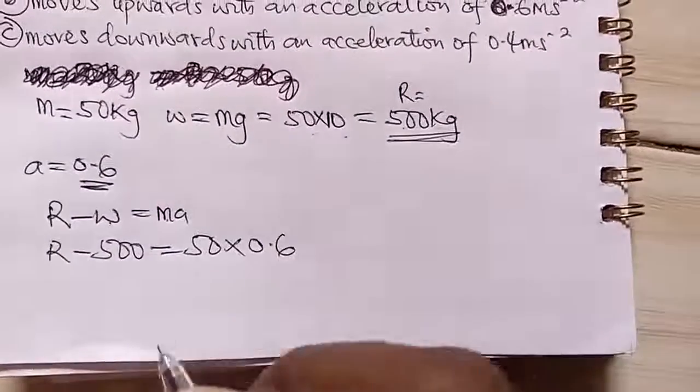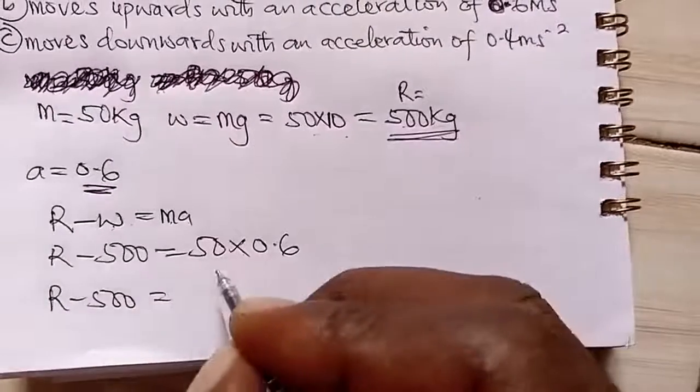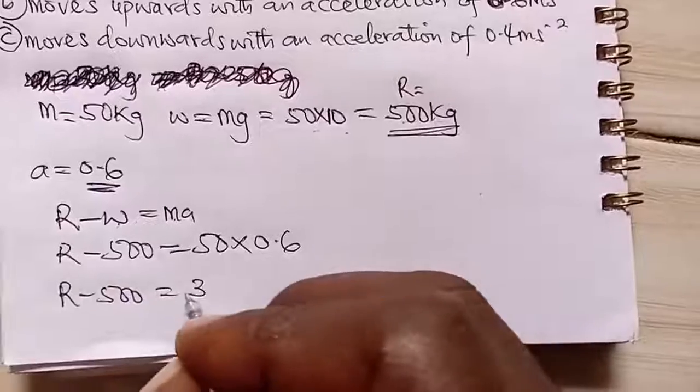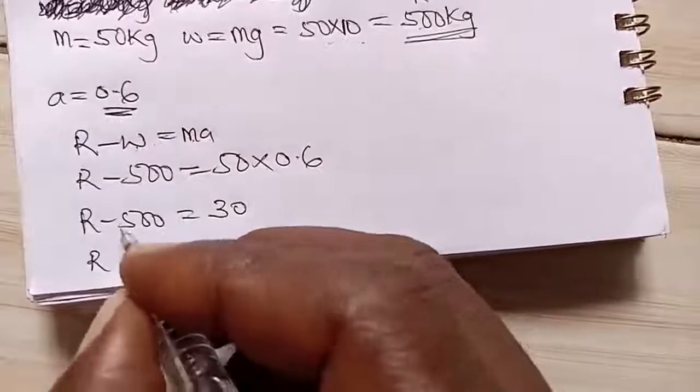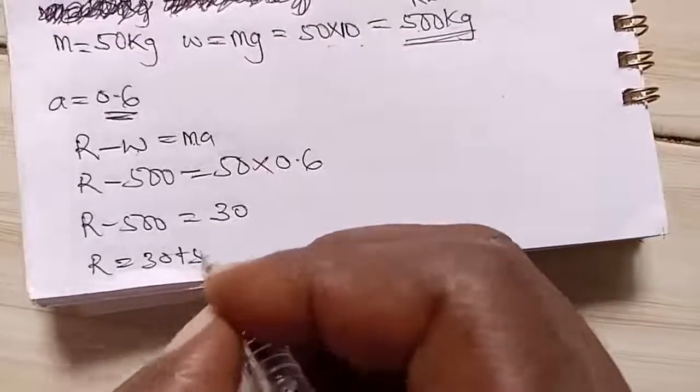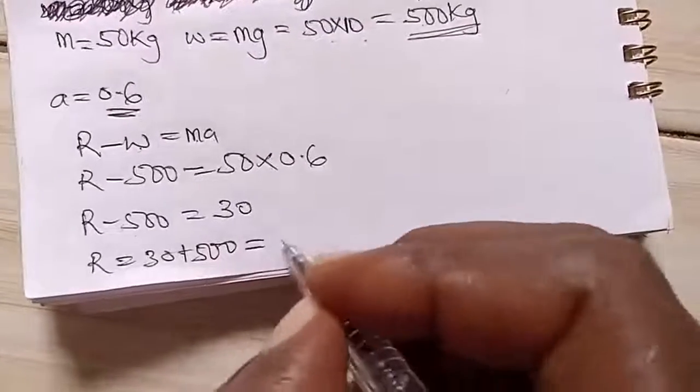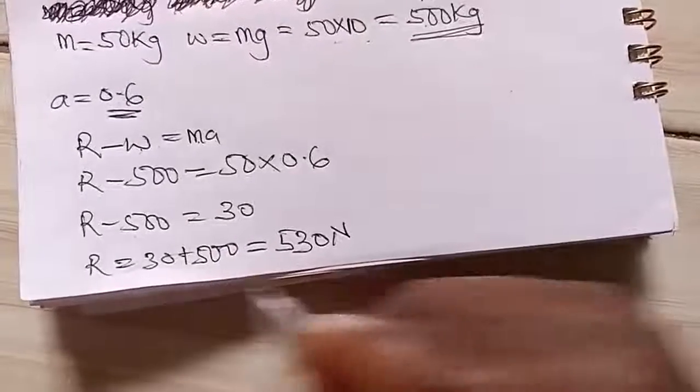So if we multiply R minus 500 is equal to, this times this will give us 30. So that we make R subject of the formula. This will cross over and becomes positive. So 30 plus 500, which gives us 530 newton.